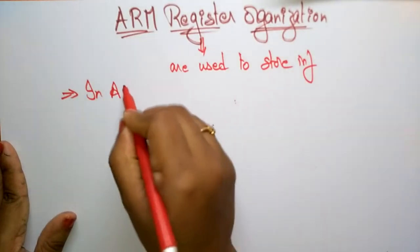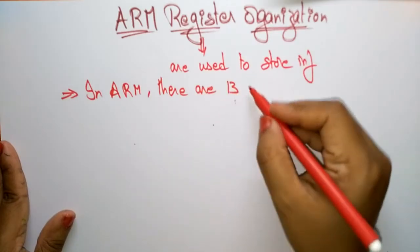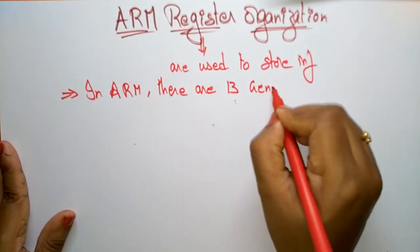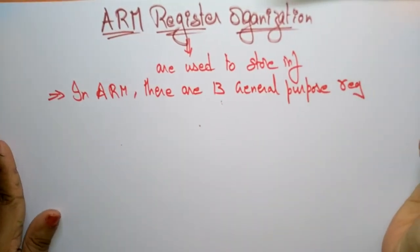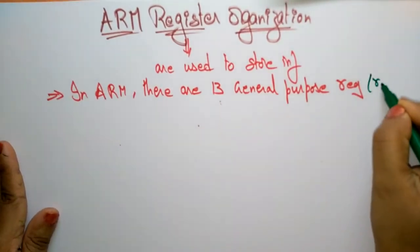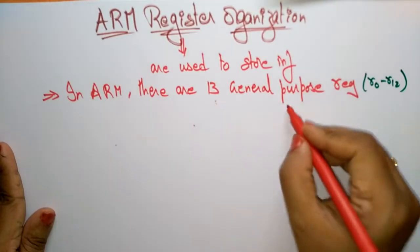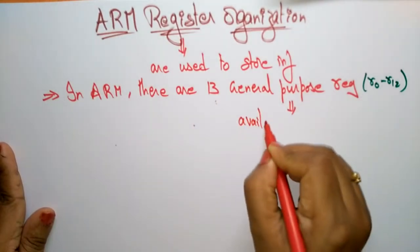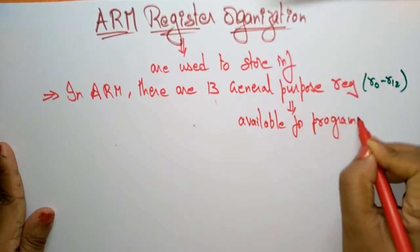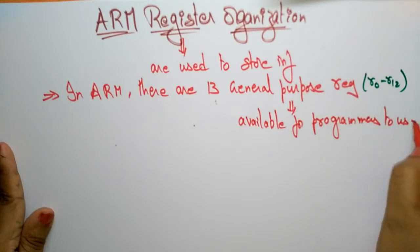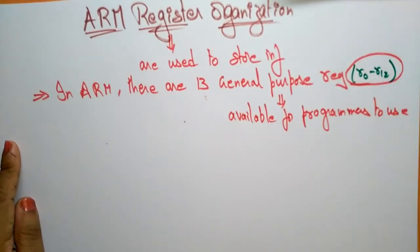In Advanced RISC Machine, there are 13 general purpose registers available — from R0 to R12. These 13 general purpose registers are available for programmers to use. From R0 to R12, programmers can use any one of these registers.